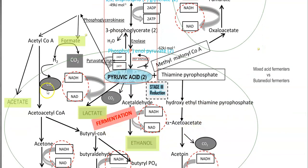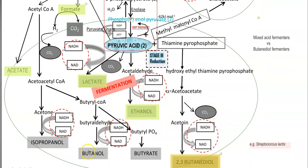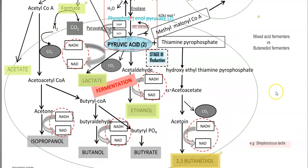In fermentation, different kinds of reduced products are synthesized. These include neutral products, acidic products such as formate, acetate, and lactate, and various kinds of alcohols such as ethanol, butanediol, butanol, and isopropanol. Based on the fermented products formed during the reduction process, organisms can be referred to as mixed acid fermenters, or if neutral products like butanediol are formed, they are referred to as butanediol fermenters.